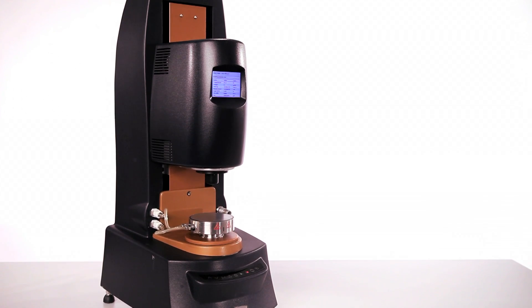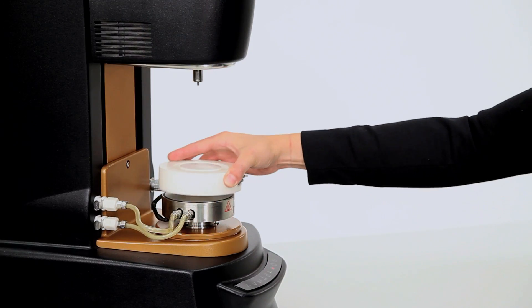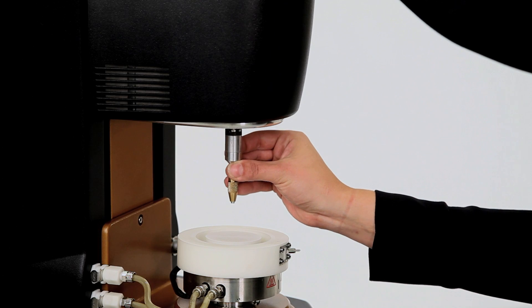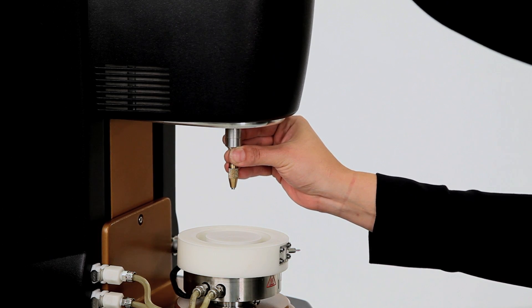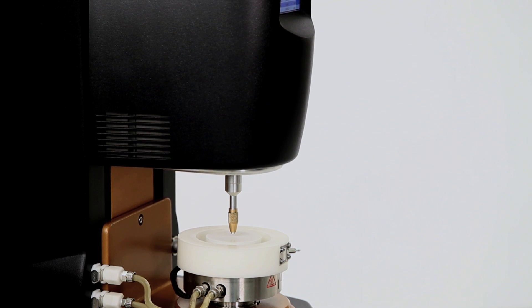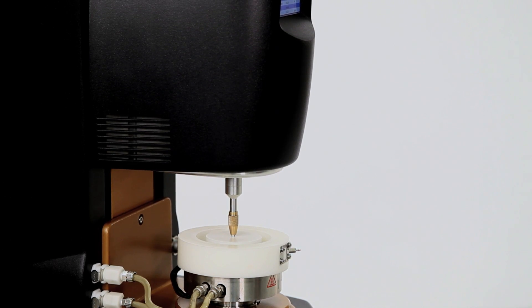First, let's set up the geometry. You'll want to mount your sample cup on the Peltier plate beforehand. Next, attach the geometry holder without the ring to the draw rod and zero the gap. Make sure not to zero the gap with the ring attached, as this could cause permanent damage.